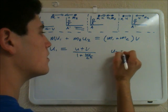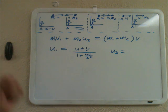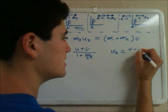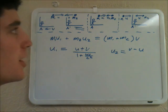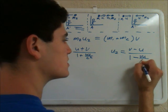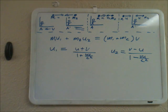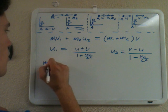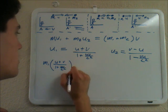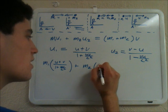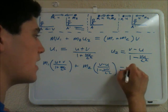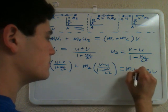So let's plug those in. We now say m1·(u + v)/(1 + uv/c²) + m2·(v − u)/(1 − uv/c²) equals m1·v + m2·v.